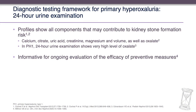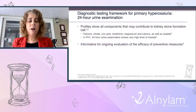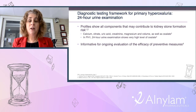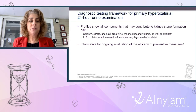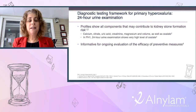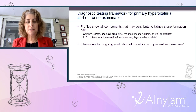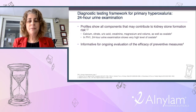In a 24-hour urine, in addition to oxalate, we look at calcium, citrate, uric acid, creatinine, magnesium, and volume. These profiles provide supersaturation values indicating ongoing stone formation risk. In primary hyperoxaluria, the 24-hour urine shows very high levels of oxalate. The 24-hour urines are also important for follow-up, performed when fluid intake is increased or preventative measures are started, to determine whether interventions are decreasing stone risk and calcium oxalate supersaturations.